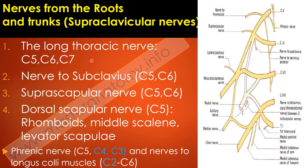A lesion to the long thoracic nerve would cause winging of the scapula, because the serratus anterior muscle helps to keep the medial side of the scapula closely attached to the thorax. The nerve to the subclavius also emanates from the supraclavicular nerves at C5–C6. We also have the suprascapular nerve, the dorsal scapular nerve — which supplies the rhomboids, the middle scalene, and sometimes the levator scapulae — a branch to the phrenic nerve from C5, and a C5–C6 branch that supplies the longus colli muscles.